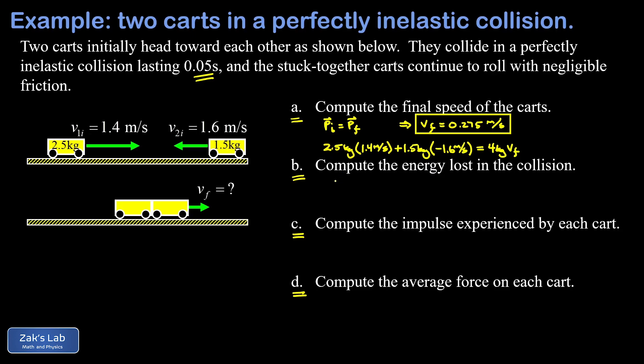In part b, we want to compute the energy lost in this collision. What we do is look at the initial kinetic energy of both moving cars, and then we'll find the final kinetic energy of the stuck-together cars now that we know how fast they're going. Then we'll just look at the difference to find out how much energy was lost.